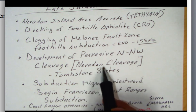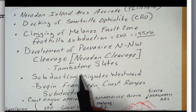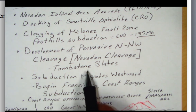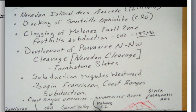And the rock types in the Sierra foothills — the 49ers, when they came, they saw these rocks standing up in this north-northwest orientation, and they called them tombstone slates because they look like tombstones. And so those are the famous tombstone slates of the Sierra Nevada foothills.